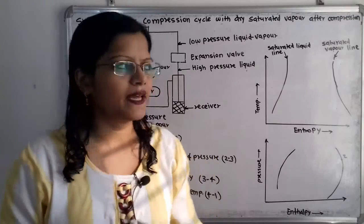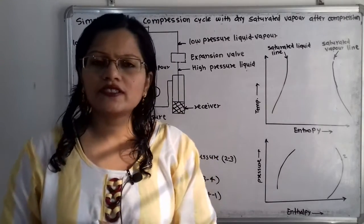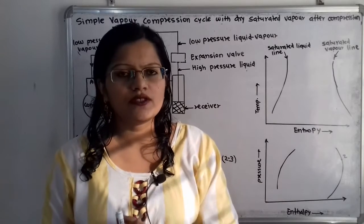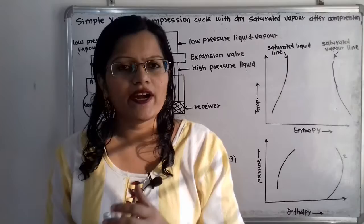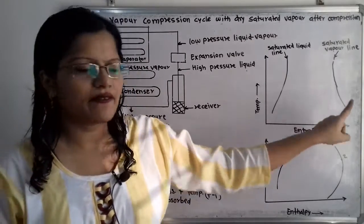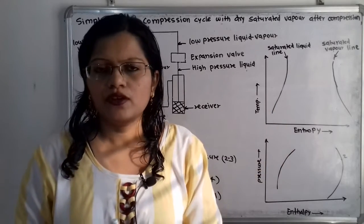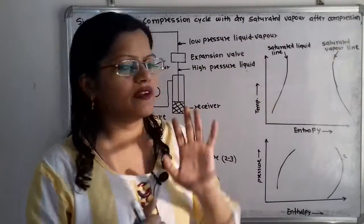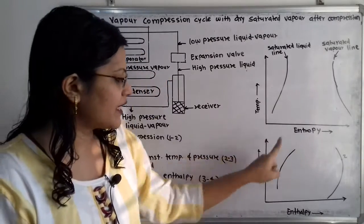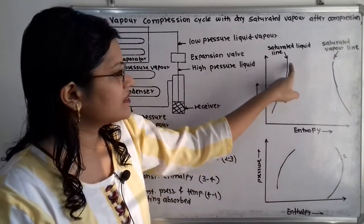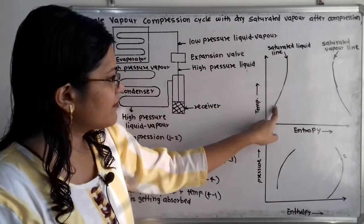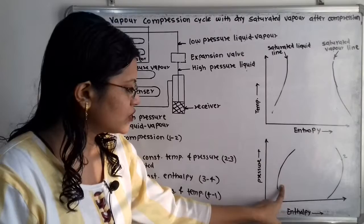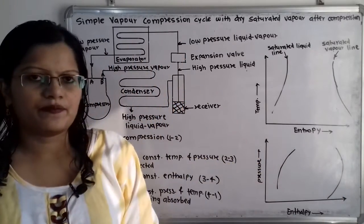The first process taking place in the vapor compression cycle is isentropic compression, from point 1 to point 2. We consider point 1 at temperature T1, entropy S1, and pressure P1. First, we draw the saturated liquid line and the saturated vapor line on both the temperature-entropy and pressure-enthalpy diagrams.